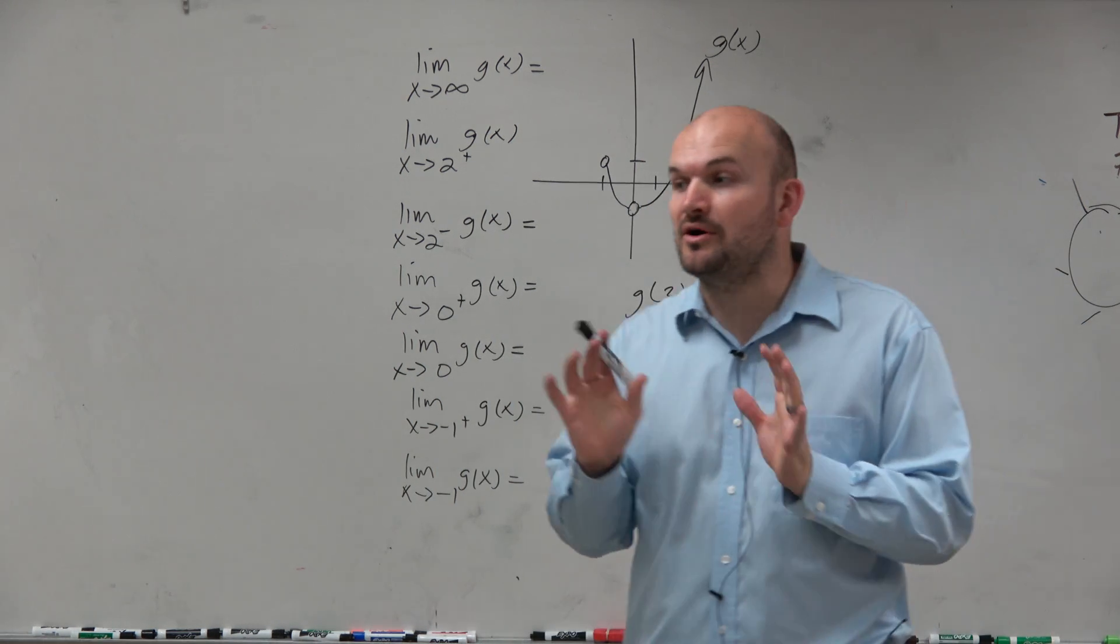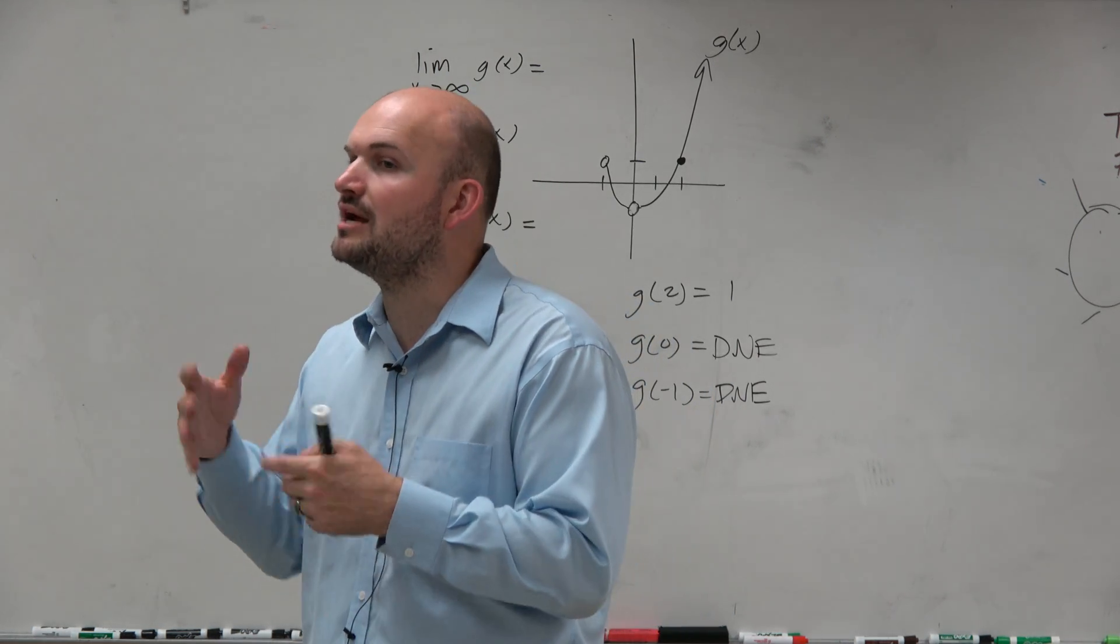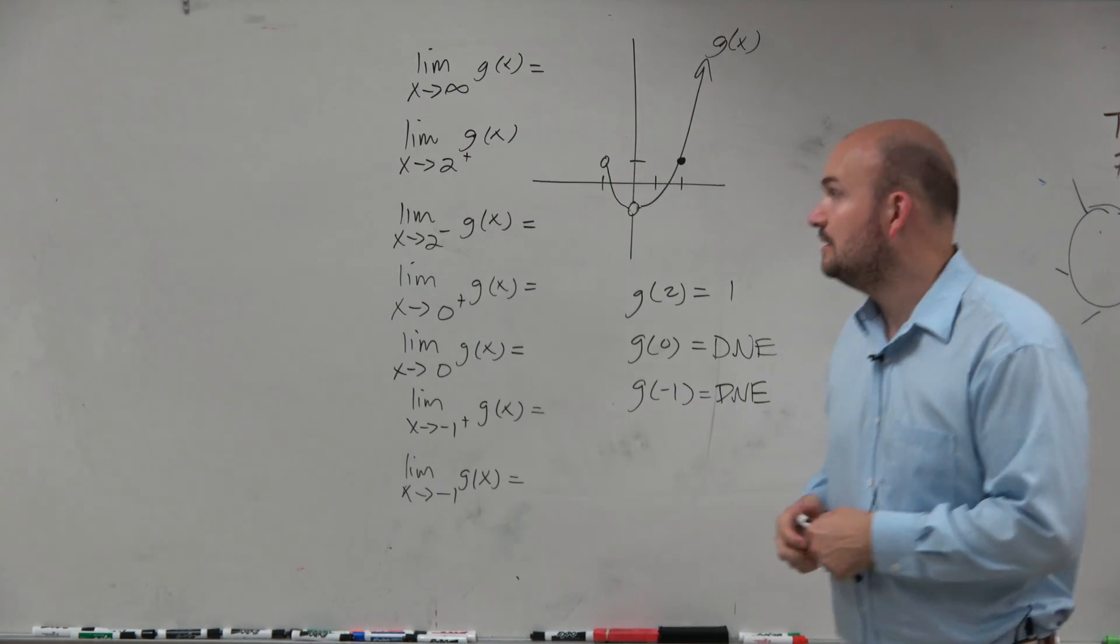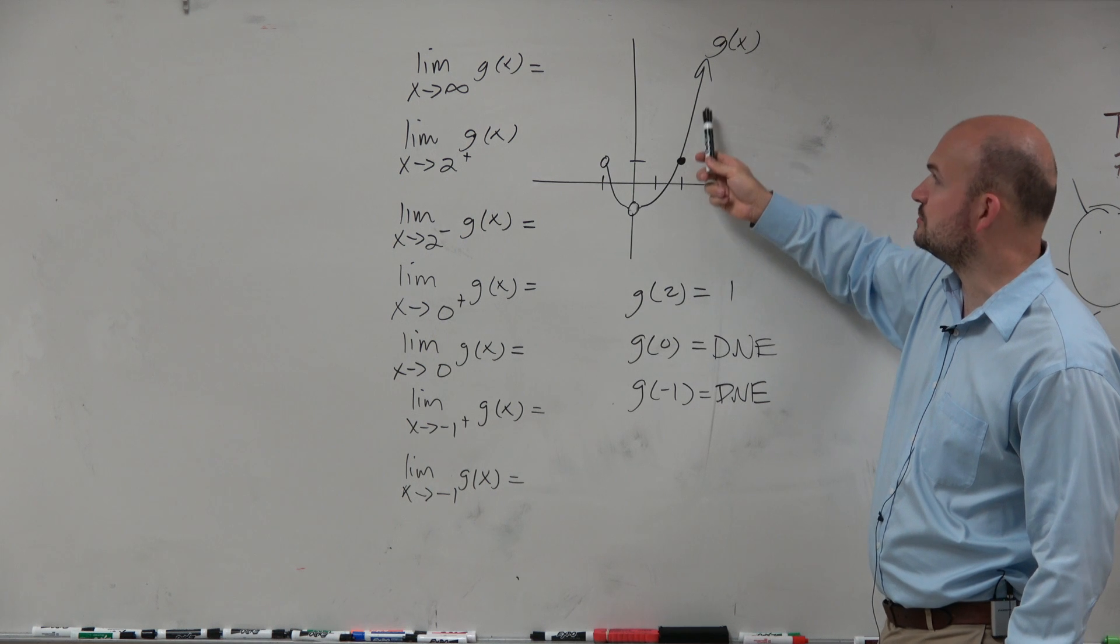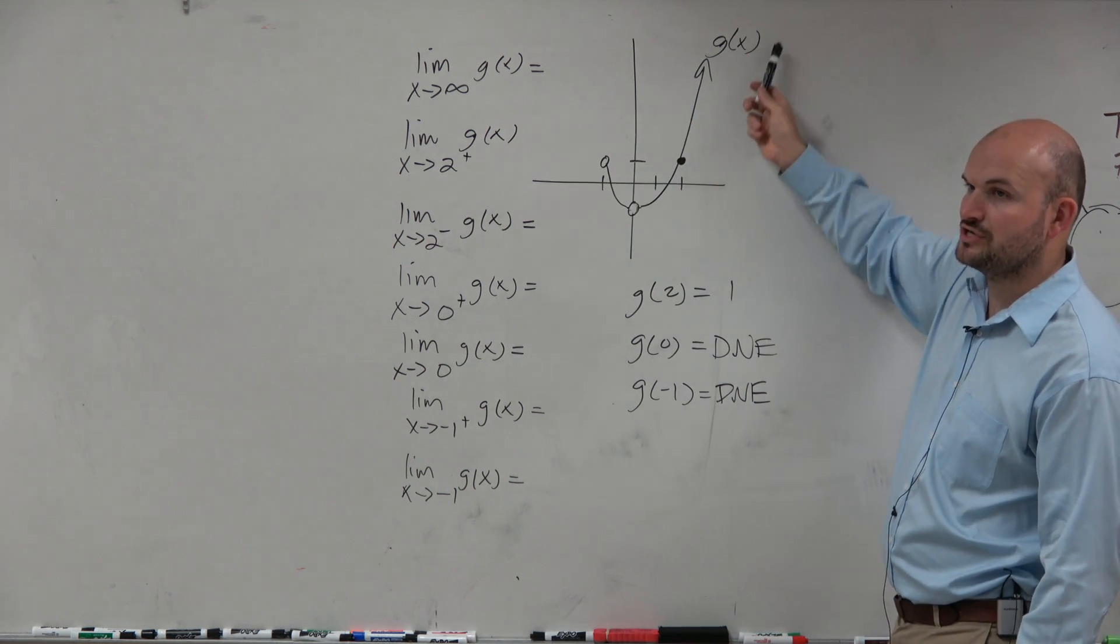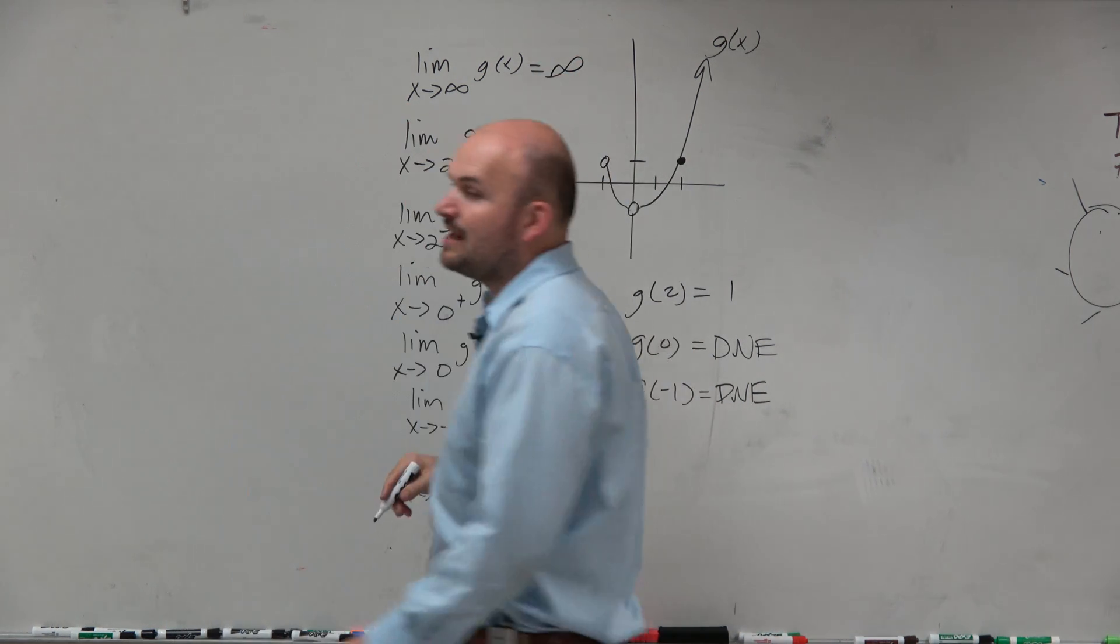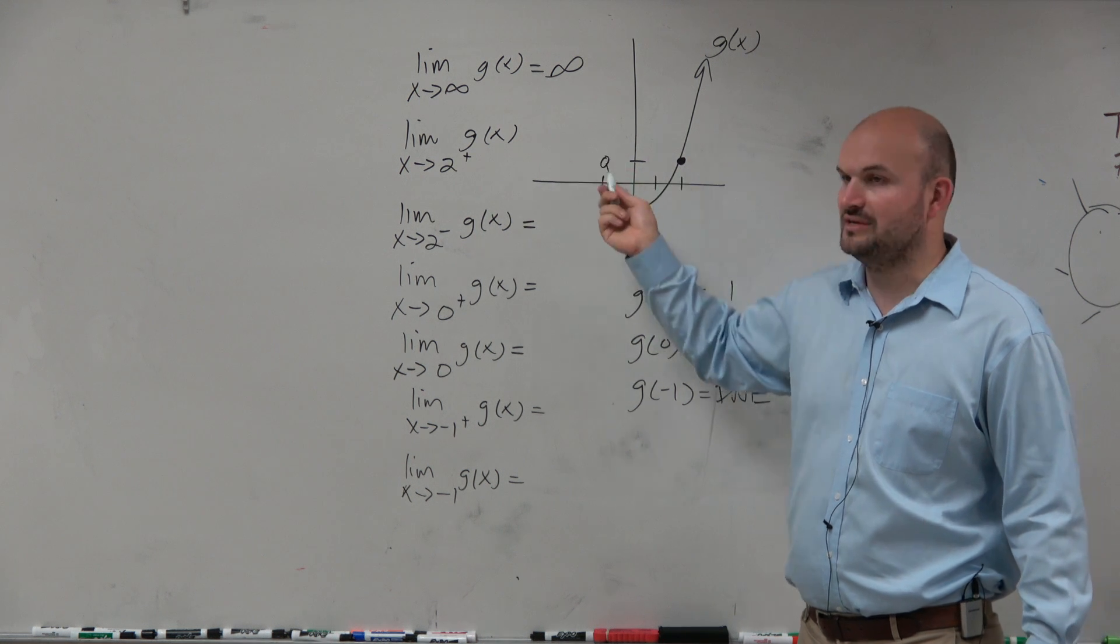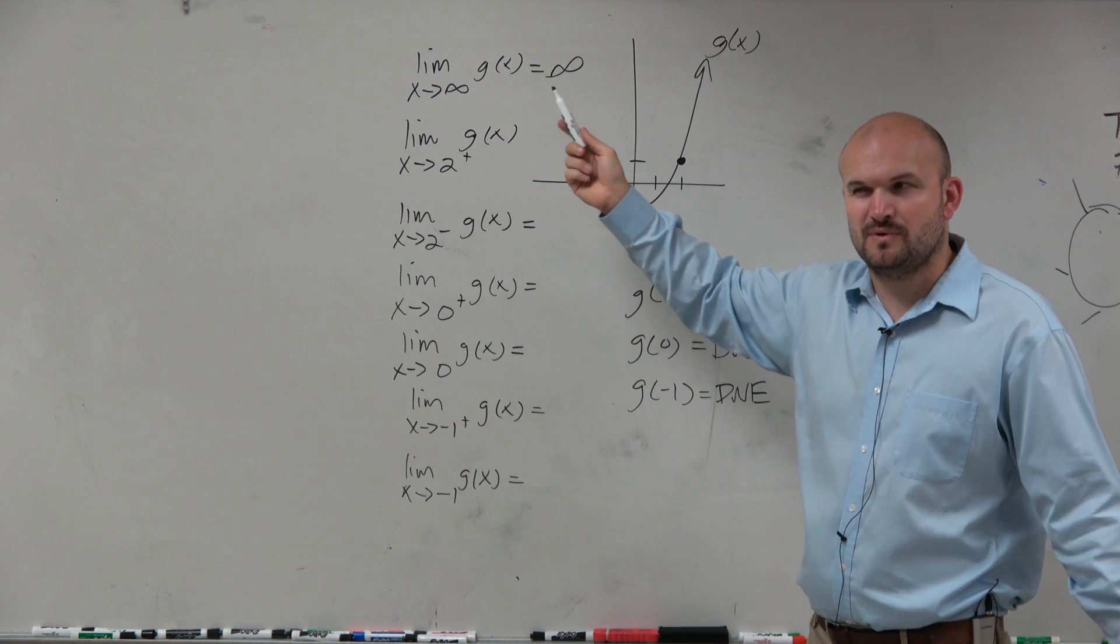But now let's talk about our limits. Again, we're not talking about what is the value of the function, we're just talking about what is the value that we are approaching. So as x goes to infinity, you can see here, as we're going to infinity, the f(x) function is going up, right? So therefore it's going towards infinity. There's no end behavior to the left, because you can see that this graph doesn't really have an arrow going left. So there is no end behavior, right? So we won't ask you a question like that.